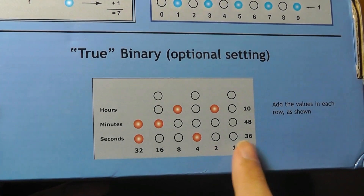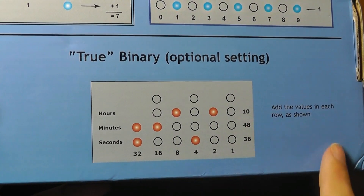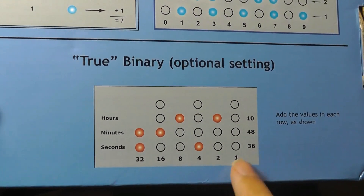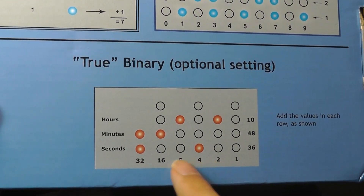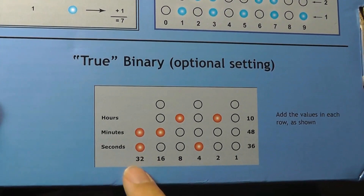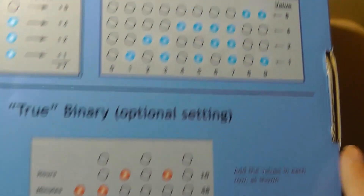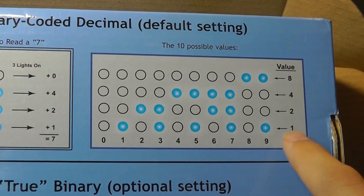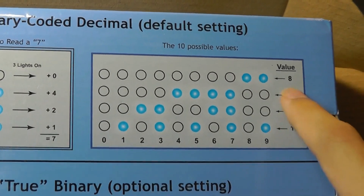In this mode the columns increase by binary — 1, 2, 4, 8, 16, and 32 — as opposed to before where the rows were 1, 2, 4, and 8.